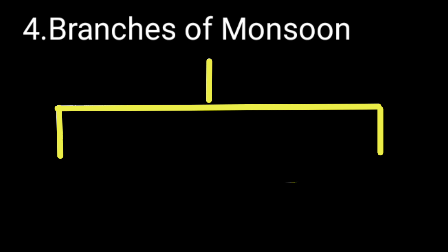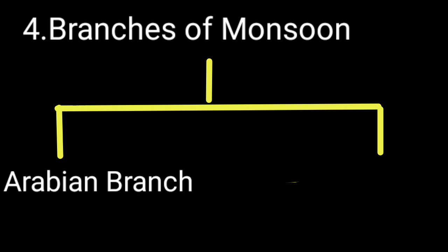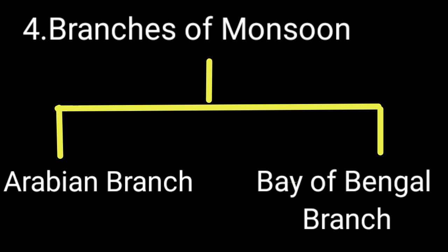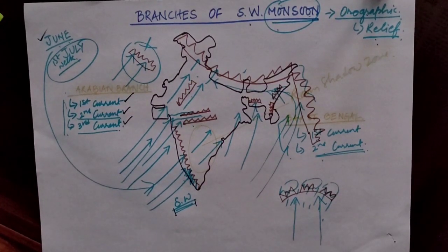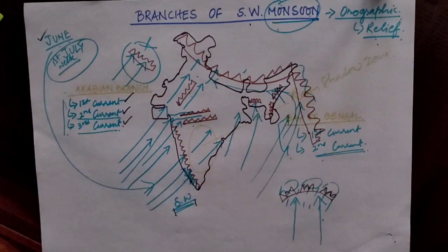The fourth point is the branches of monsoon winds. This is divided into two types: the branch that enters from the Arabian Sea is called the Arabian branch, and the one that enters from the Bay of Bengal is termed the Bay of Bengal branch. Now let us discuss the Southwest monsoon and its branches.